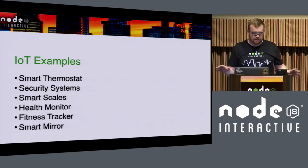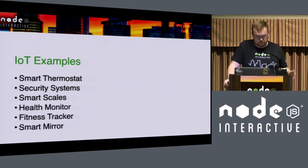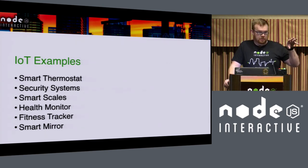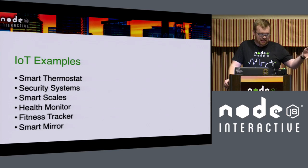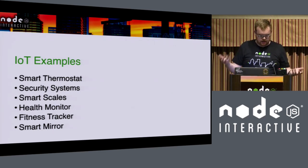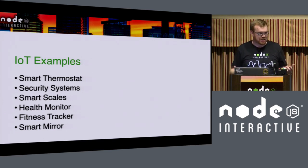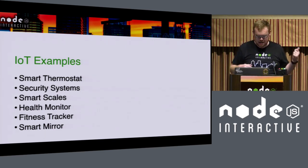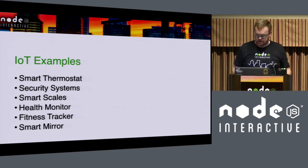Some examples of IoT devices are smart thermostats like the Nest. People got turned off by them being taken over by Google, so they started building their own. There's security systems, smart scales to see how badly you're doing from your last year's new year's resolution, fitness trackers and smart mirrors and things like that.